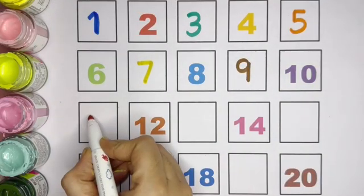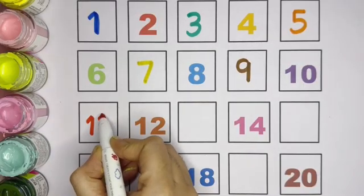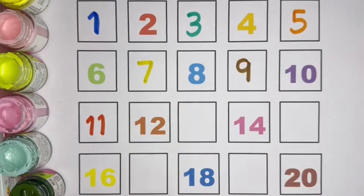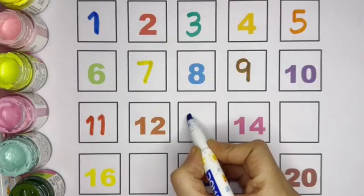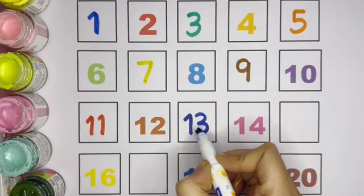After 10, which number kids? 11. 1, 1, 11. Next is 12, 13. 1, 3, 13.